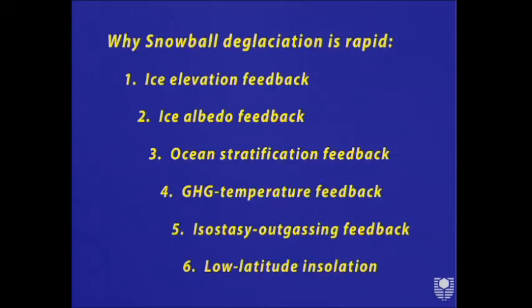The greenhouse gas temperature feedback: as you warm the ocean, the solubility of many greenhouse gases including CO2 decreases, so the ocean degasses, making it warmer. There's also the outgassing feedback — subaerial volcanism increases when you deglaciate because you're decompressing all the magma chambers. This is observed in the last deglaciation as an increase in magma production in Iceland. And of course, most of our ice sheets are at low latitude, so they're under intense solar forcing and they're going to melt fast.